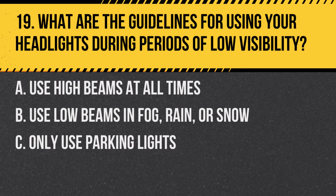Question 19: What are the guidelines for using your headlights during periods of low visibility? A. Use high beams at all times. B. Use low beams in fog, rain, or snow. C. Only use parking lights. Answer: B. Use low beams in fog, rain, or snow. During low visibility conditions, use low beam headlights to ensure visibility and safety.